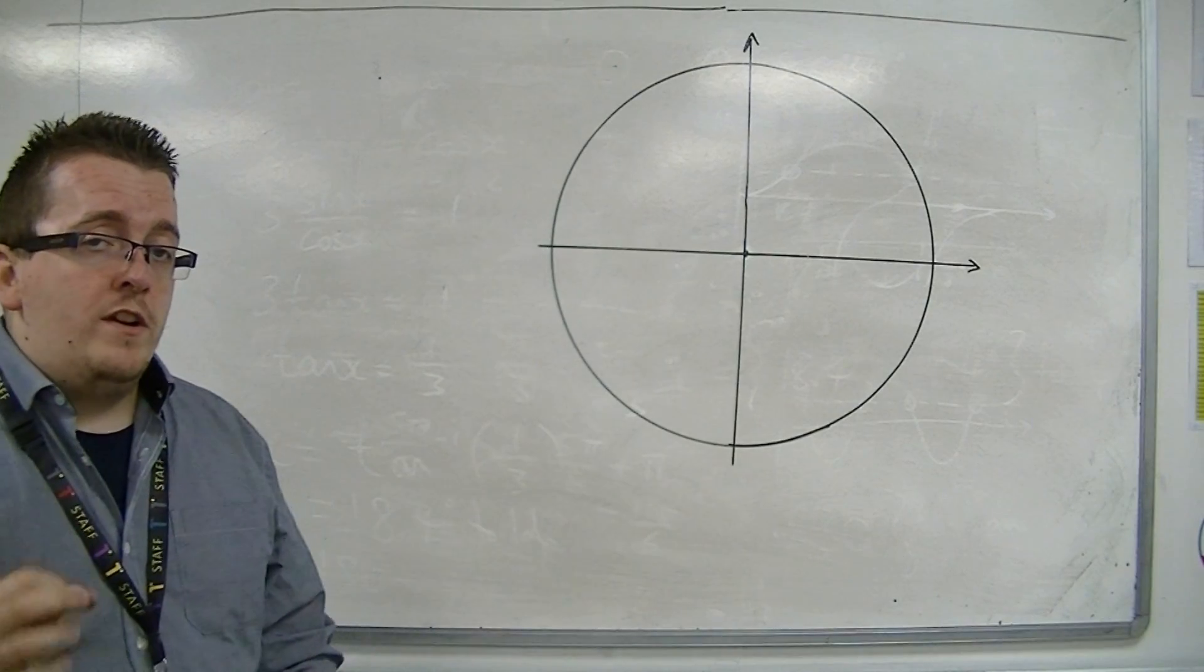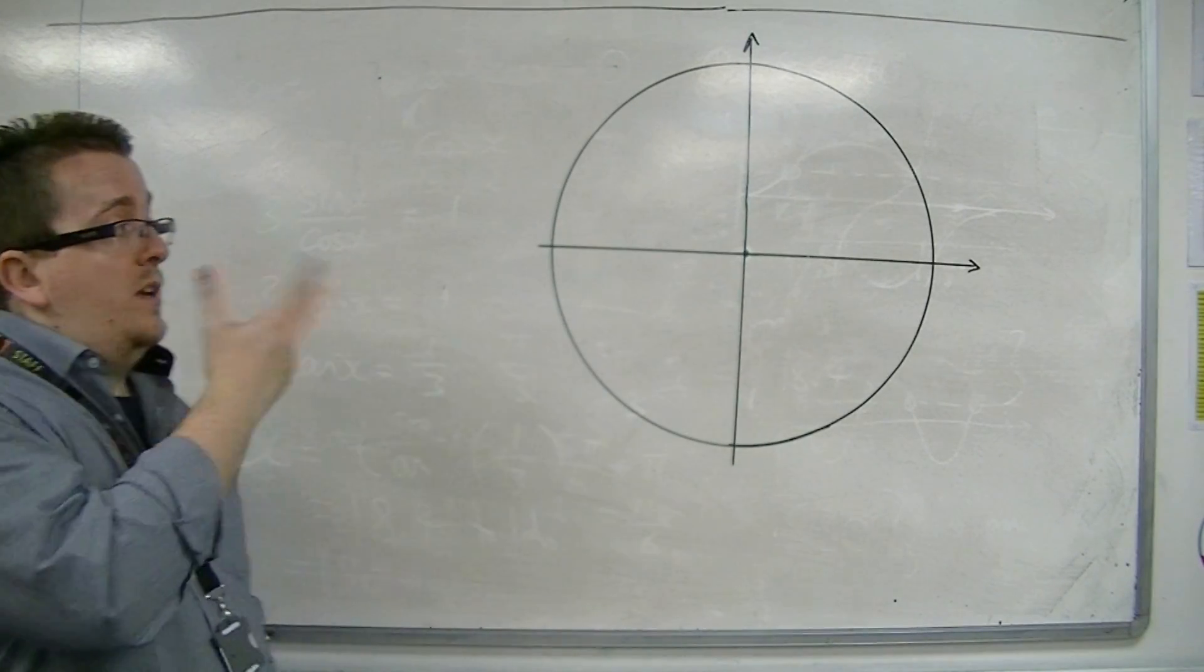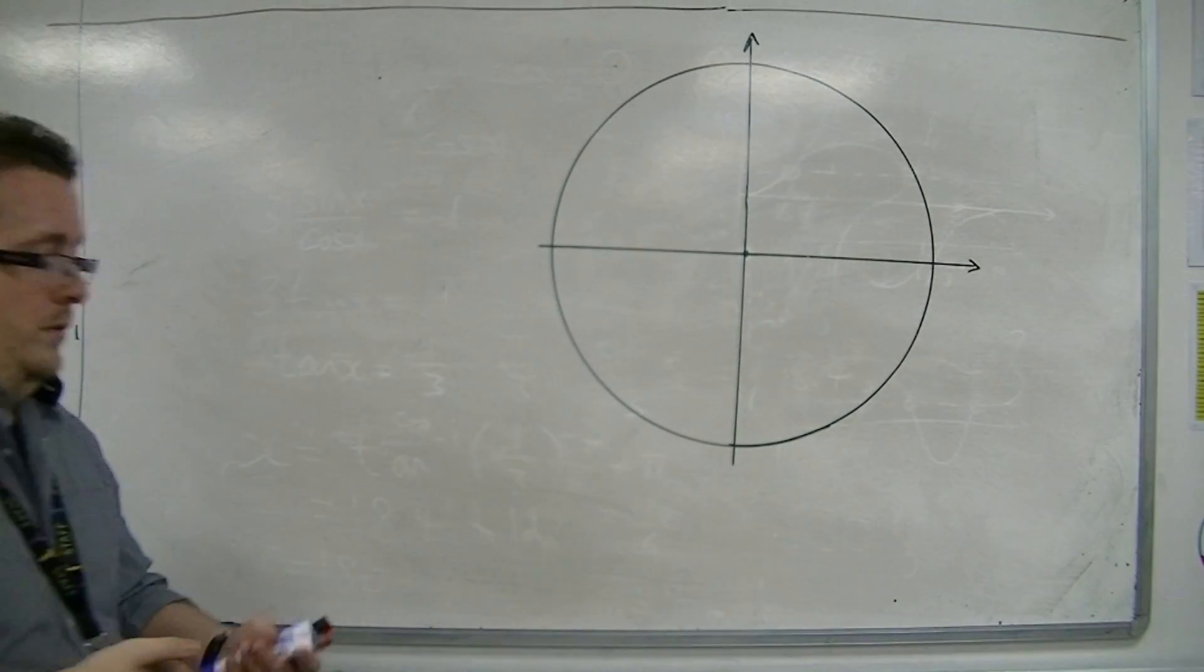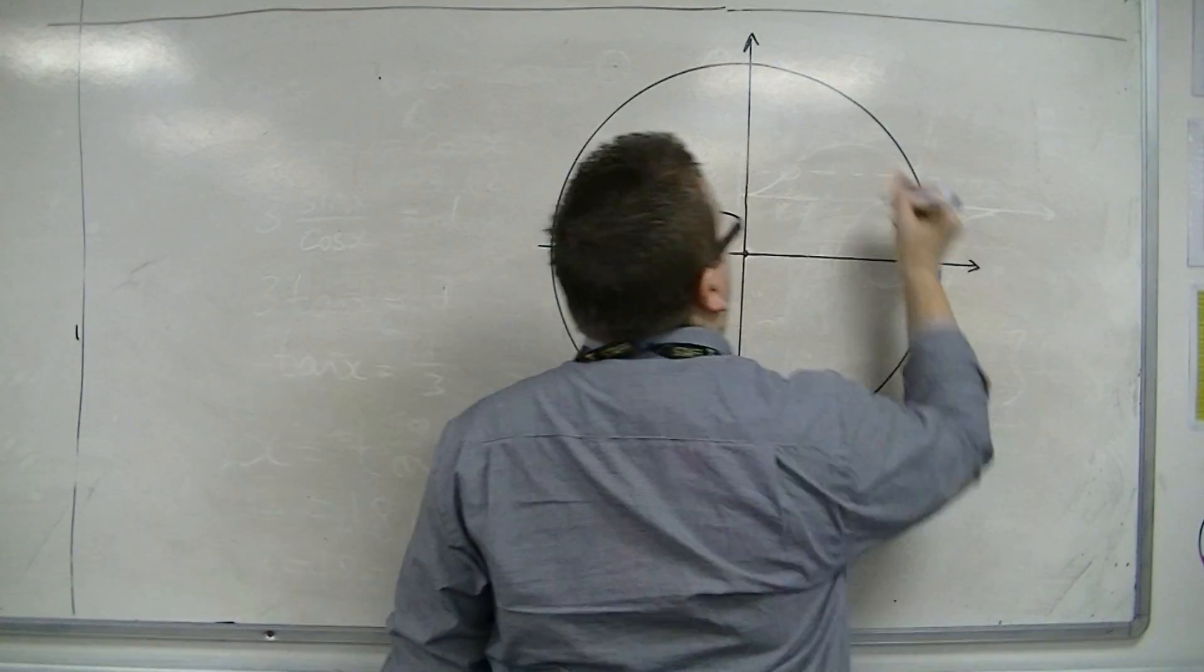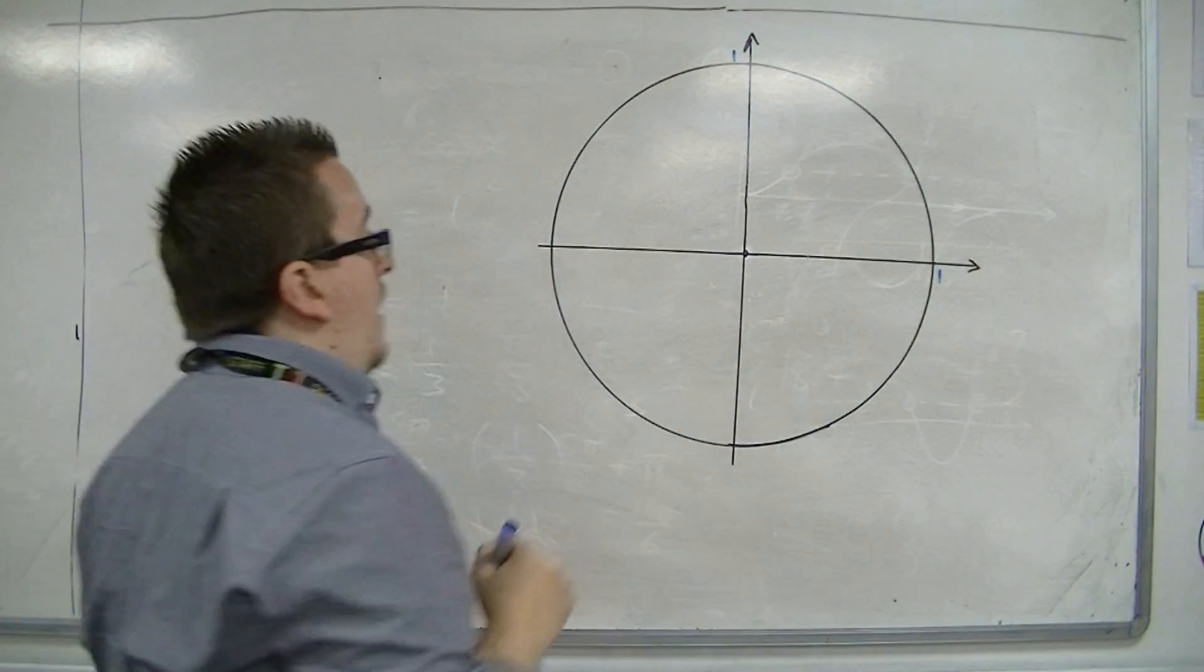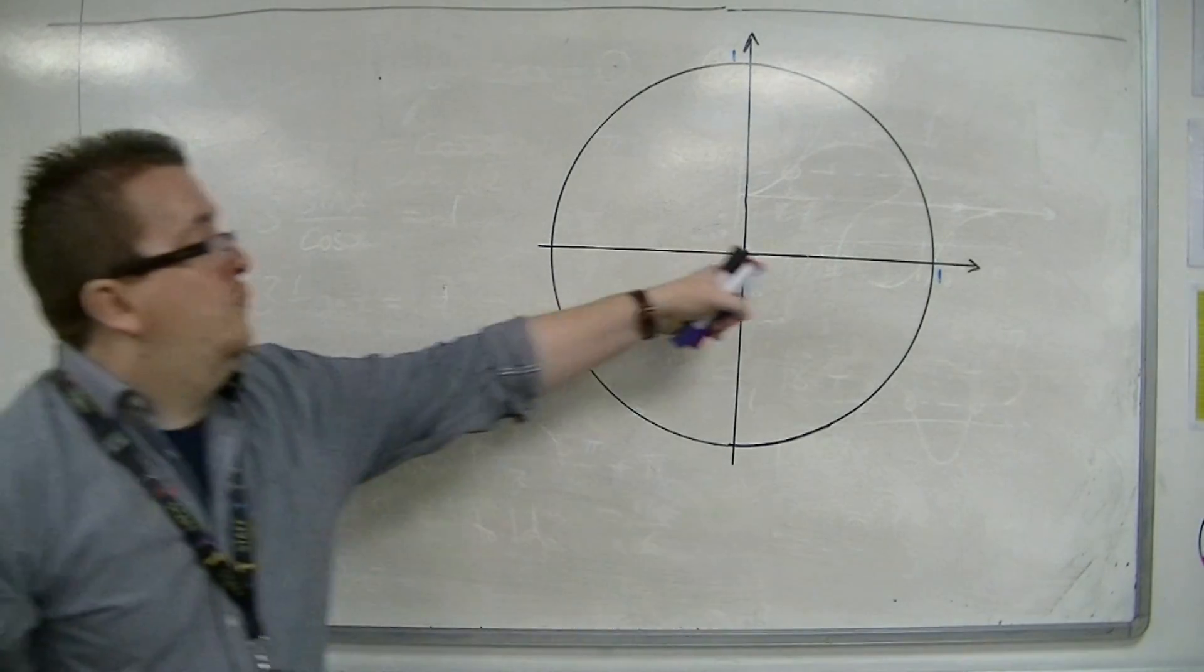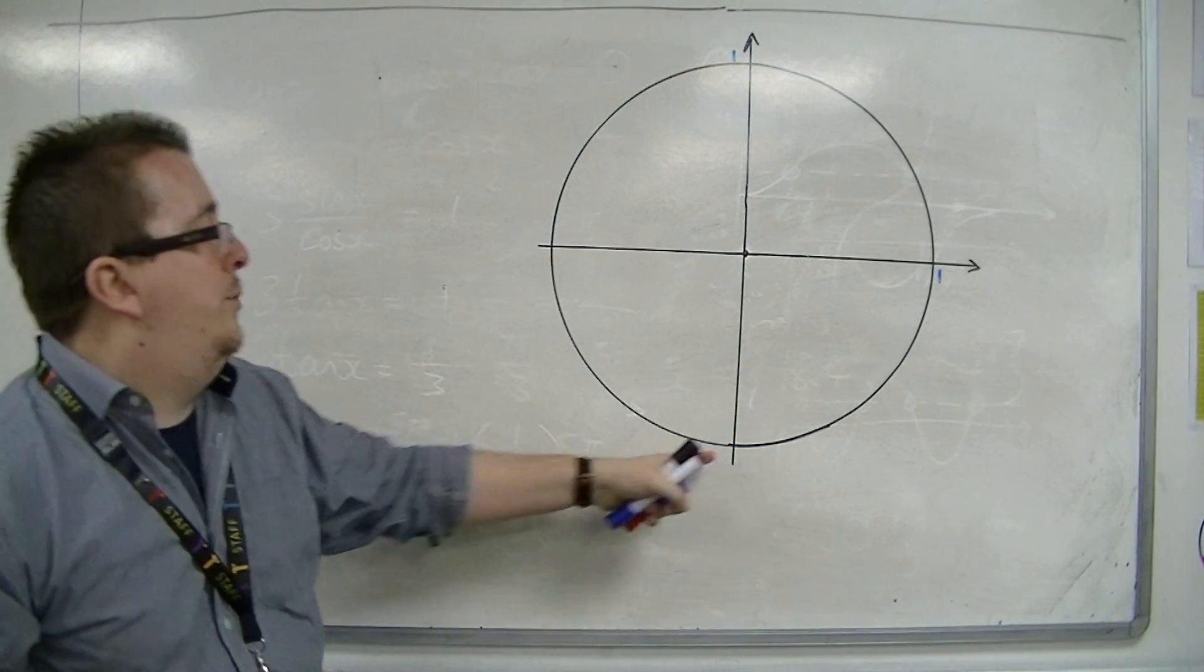The second trig identity comes from the unit circle. The unit circle is a circle that has radius 1. So radius 1, 1, that would be at minus 1, minus 1.